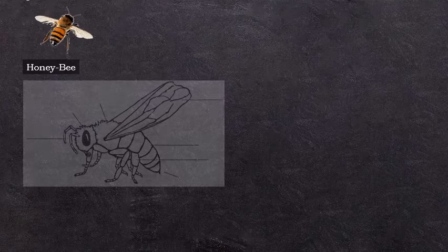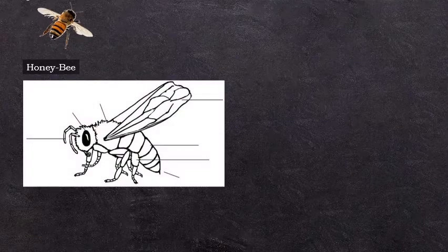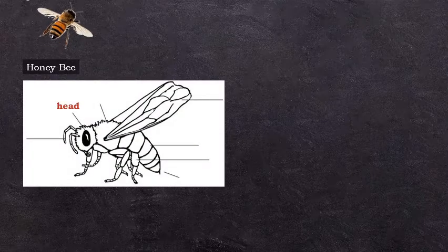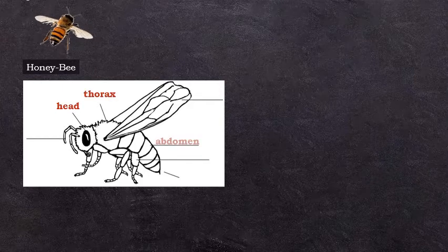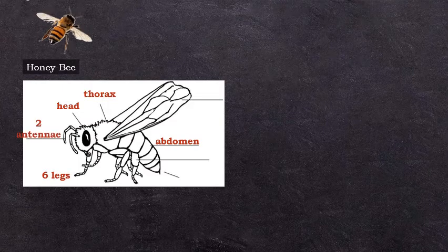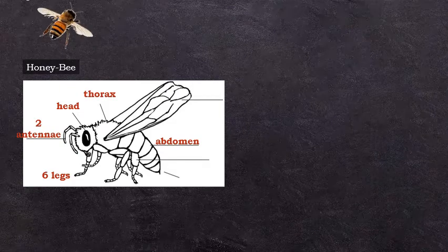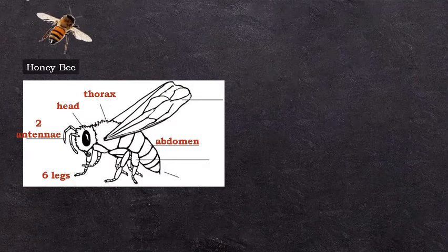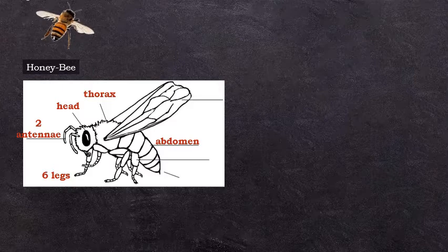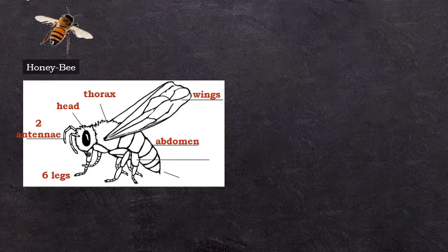Honeybees are insects since they show the three body sections of an insect: the head, the thorax, and the abdomen. Insects have six legs connected to their thorax, and they have two antennae on their head for smelling and for finding food. Most insects are wingless but bees have wings.